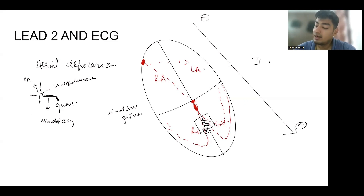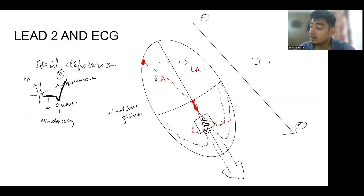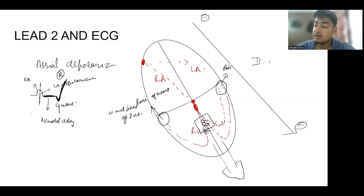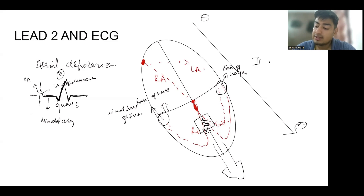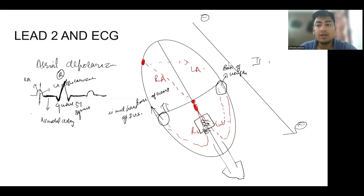After the Q wave, there is major ventricular musculature depolarization, leading to the production of the R wave. Then at the end, the base of the ventricles depolarizes, producing a small negative S wave because the direction is again from below upwards. After that we have the ST segment, which represents the isoelectric phase, and then the T wave, which is due to ventricular repolarization. This is how a normal ECG looks in lead 2.